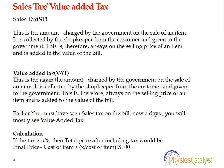So how does the calculation work? If the tax is x percent, the total price after including tax would be: final price equals cost of item plus x percent of cost of item, that is equal to cost of item multiplied by x divided by 100. So we can solve problems based on this formula.